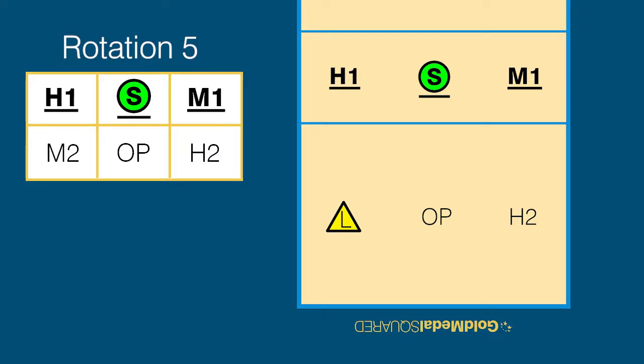Rotation 5 is one of the simplest serve receive formations regardless of who the three primary passers are.